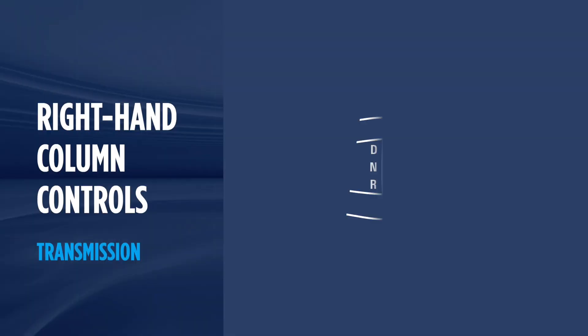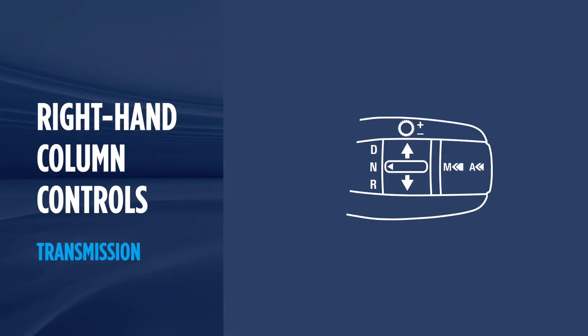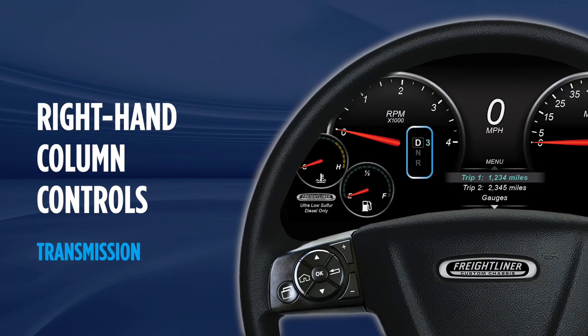Let's start with the right-hand column controls. Move Drivetech's swivel gear selector to forward, middle, or back to position for Drive, Neutral, and Reverse. Once you select Drive, you'll notice that OptiView gives you complete visibility of the current gear selection.